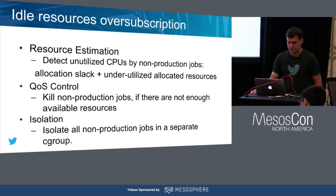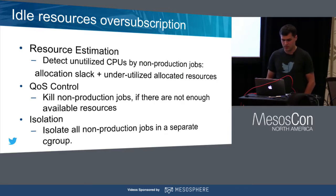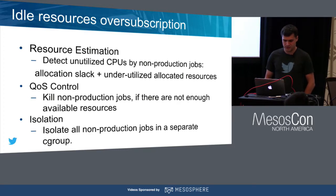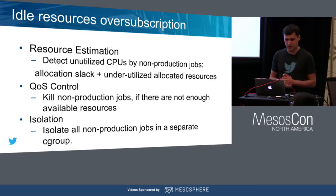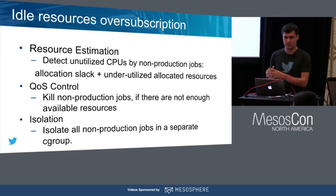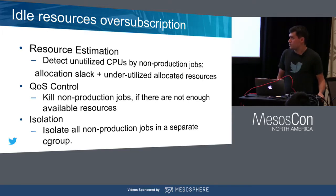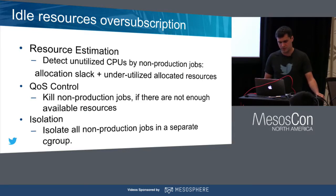We came up with the idea of idle resources oversubscription within the Mesos model. For resource estimation, we detect unutilized CPUs by non-production jobs — that's basically allocation slack, resources not allocated to any type of job — and we add underutilized allocated resources used by non-production jobs to that. QoS control is responsible for killing non-production jobs if there are not enough available resources.